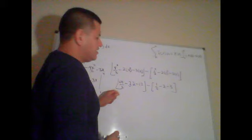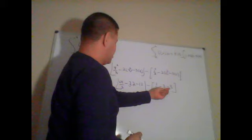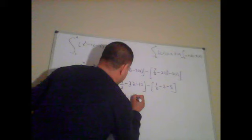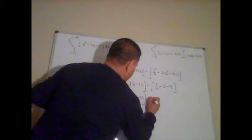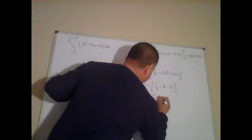Then, what I do, now that I have the numbers, I can change the signs. So I can change the signs and I say, 64 over 3 minus 32 minus 12 plus. Put the plus sign, and then I change it to a minus 1 third. Plus 2 plus 3.